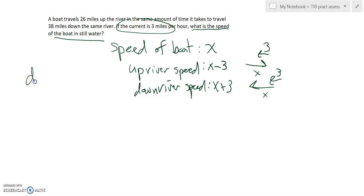I know that distance equals rate times time. I know the rate going upriver and downriver. I also know the distance for both of those. So going upriver, the boat travels 26 miles up the river. So the distance going upriver is 26. The distance traveling 38 miles down the river is 38.